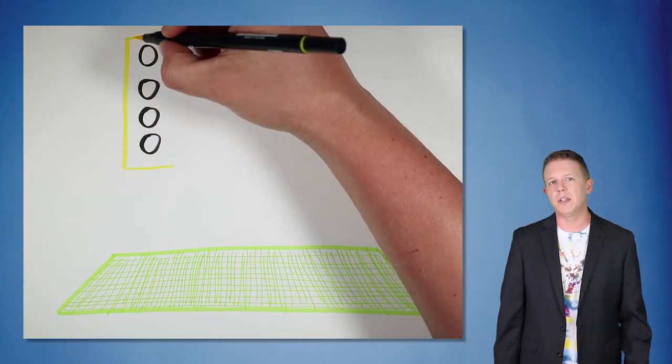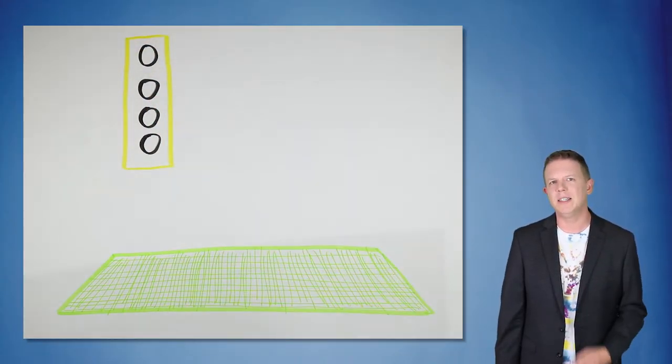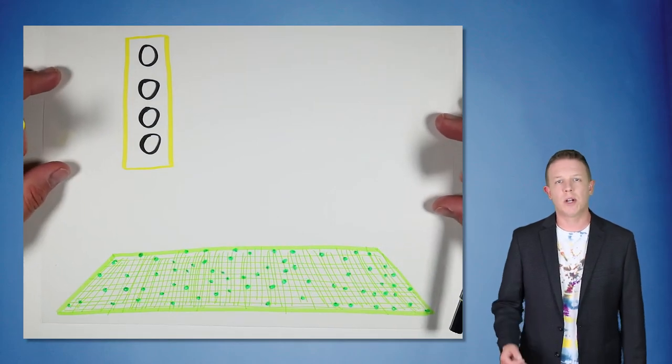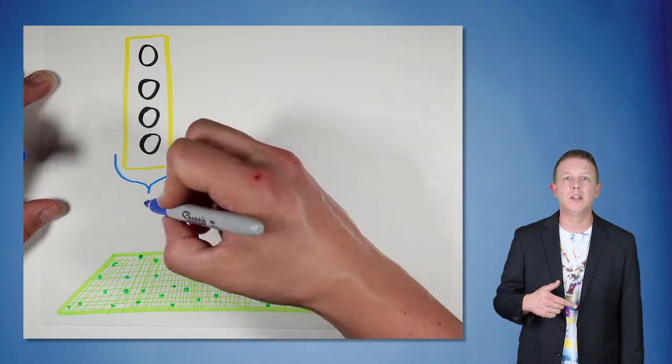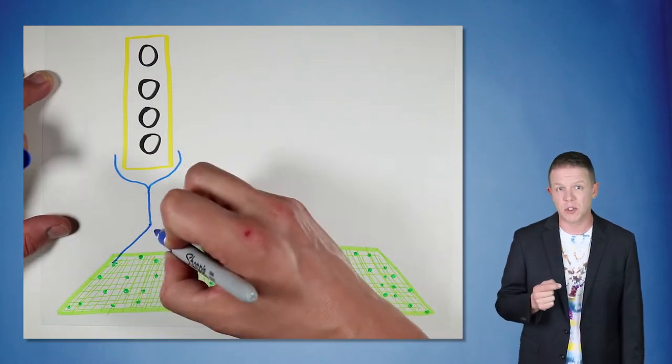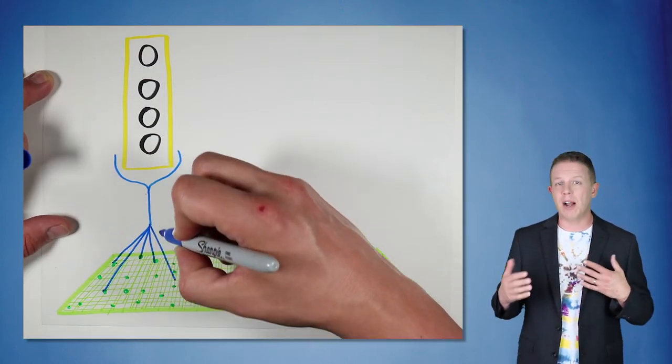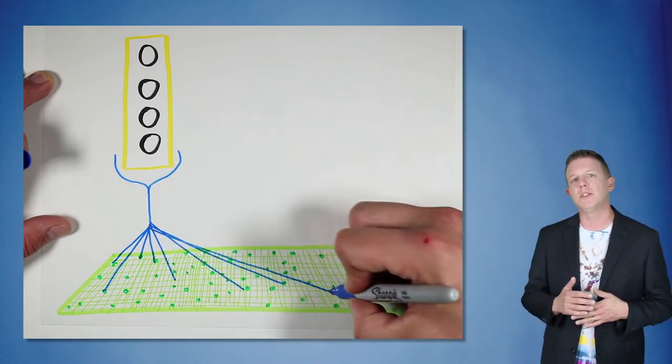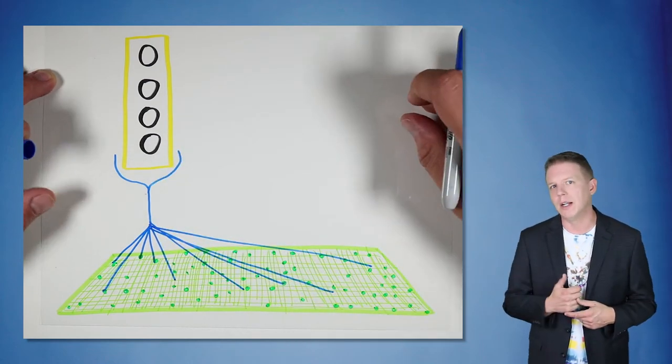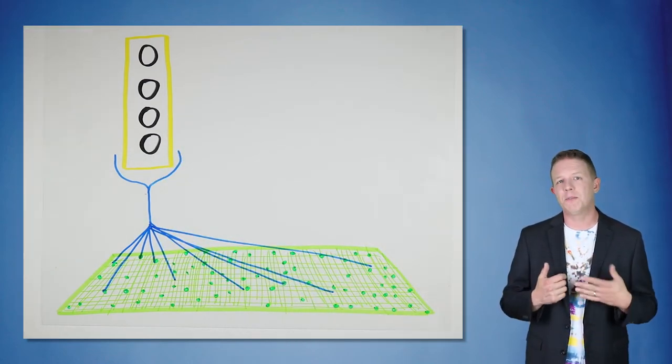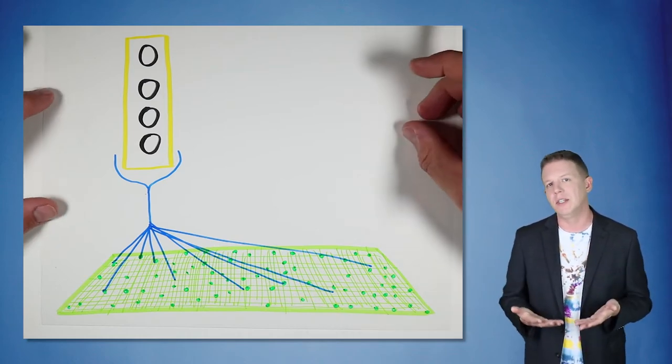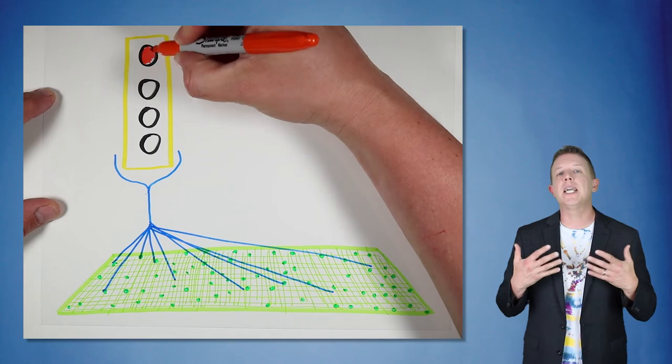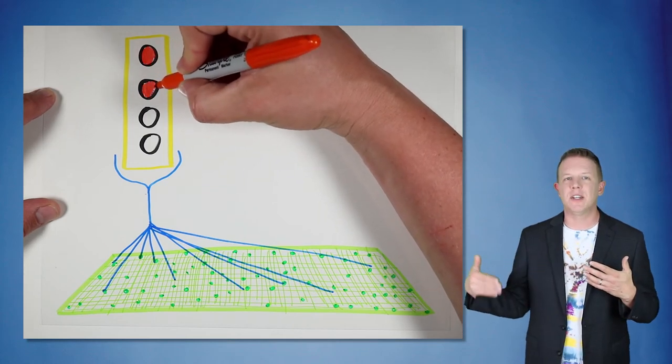We talked a little about bursting in the last episode, but one key idea is still missing. When a column bursts, how is a cell within the bursting column chosen to represent that new sequence in the future? Let's say that proximal input causes some columns to activate. Here's one of those columns. You can tell that this spatial input was not predicted because there are no predicted cells in this column. So the minicolumn bursts and every cell is activated.